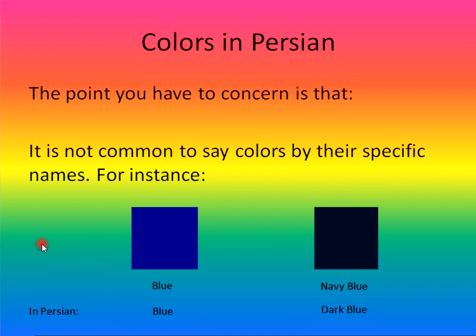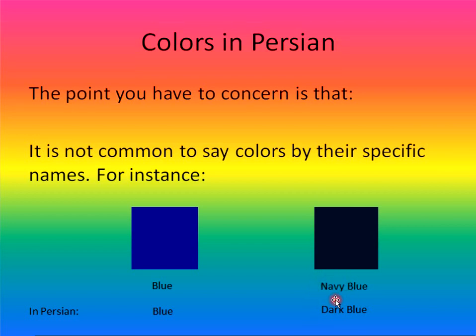First of all, let me tell you about a point when I want to say colors in Persian. We have some specific colors in Persian, for example blue and navy blue. But generally, people prefer to just use words such as dark and light instead of saying these specific words. There are some exceptions that I'll tell you about in the rest of the video.